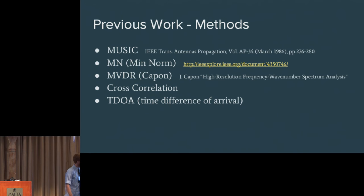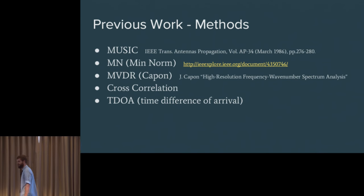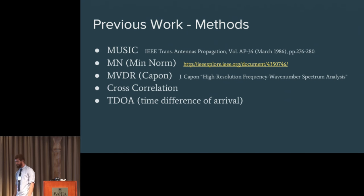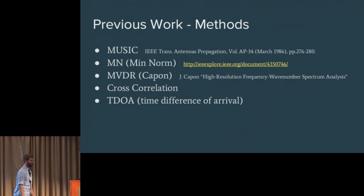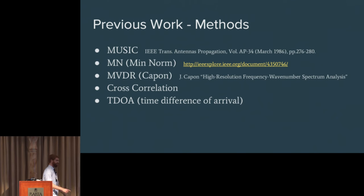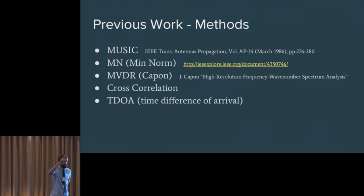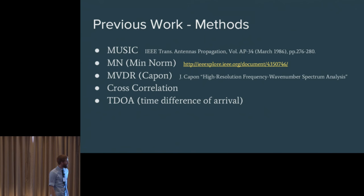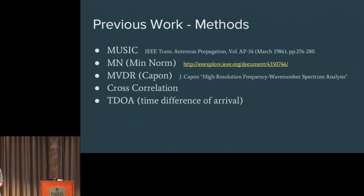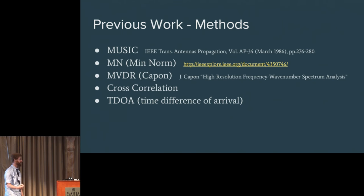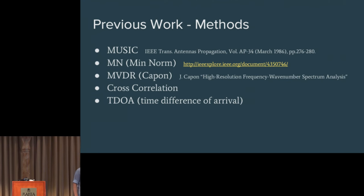As far as methods for angle of arrival or direction of arrival analysis, there's a lot of options and research already done. One of the most common ones I kept coming across was MUSIC, multiple signal classification. Many of you may recognize the plots that come out of it: really spiky plots that have an x-axis representing the angles all around your antenna array, and peaks wherever there's energy. Other methods such as MVDR, MVDR is kind of similar. Cross-correlation: you can do cool things with cross-correlation. If we have a couple of antennas and we look at which antenna picks up the signal first, you can start making some statements about which direction the signal's coming from.